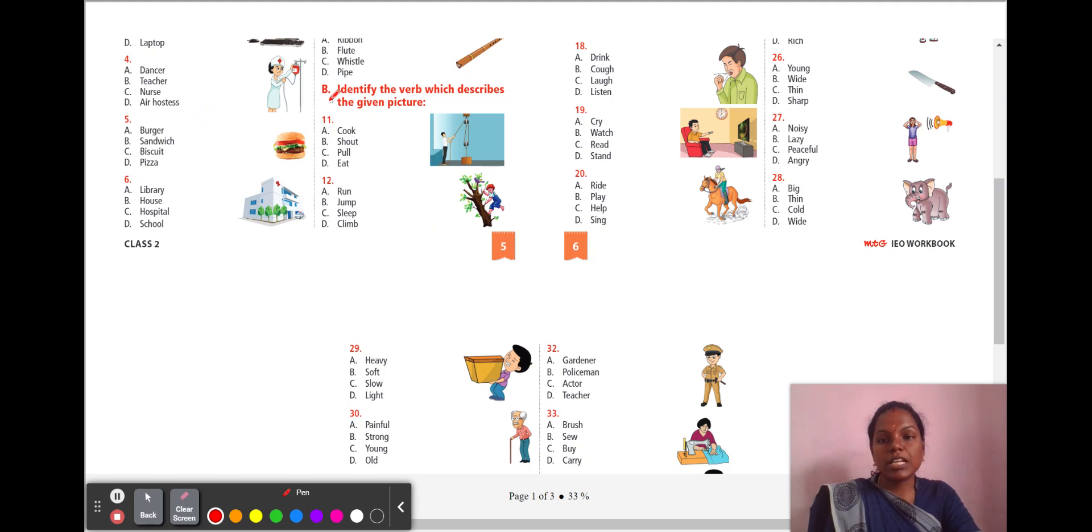Let's move to section B. Here, we have to identify the verb which describes the given picture. So, what is the action the person is doing in the picture? Can you see a boy standing over there? He is having a rope in his hand and there is a weight. So, he is pulling that weight. So, what is the action of the picture? A, cook. B, shout. C, pull. D, eat. So, he is pulling the weight. The answer is C, pull.